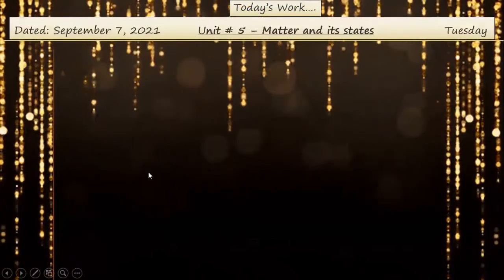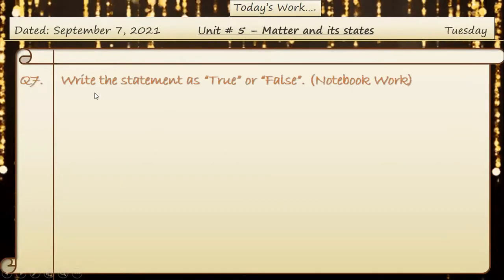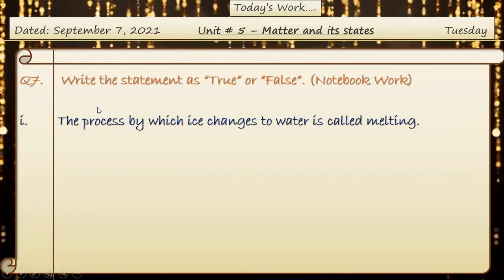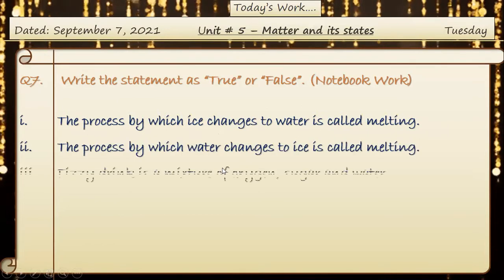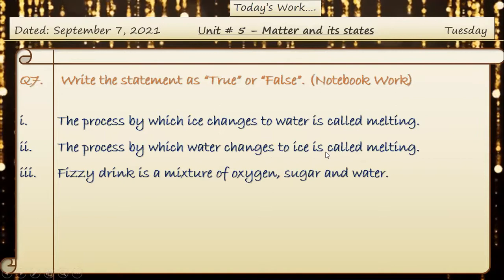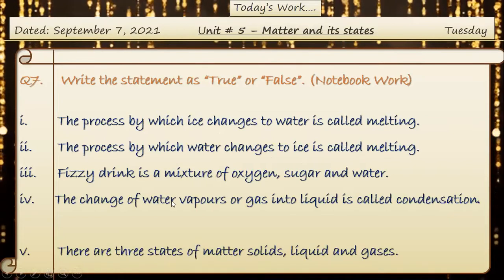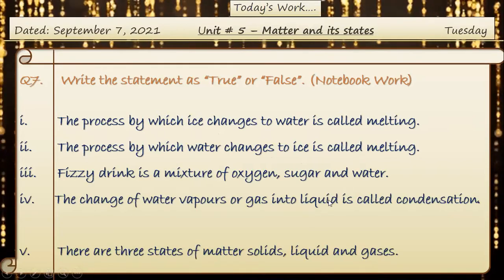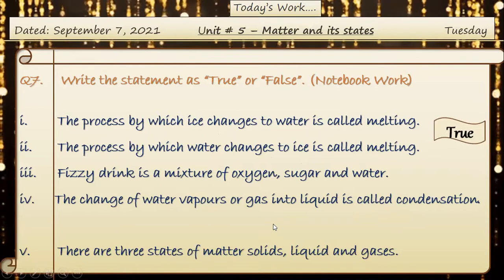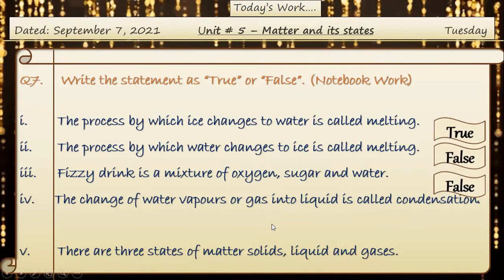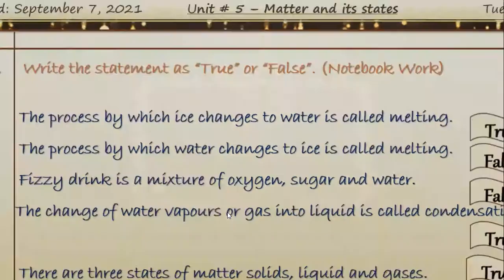Now for today's notebook work: unit number five, Matter and States, question number seven — write the statement as true or false. The process by which ice changes to water is called melting. The process by which water changes into ice is called melting. A cold drink is a mixture of oxygen, sugar, and water. The change of water vapor or gas into liquid is called condensation. There are three states of matter: solids, liquid, and gases. Read the lesson carefully, do it on your own, and learn it.